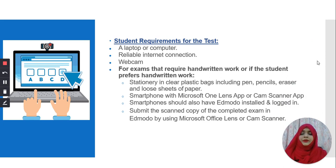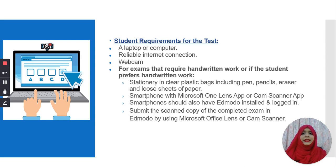Student requirements for the test include: a laptop or computer, a reliable internet connection, and a webcam. For handwritten work, you need stationery in a clear plastic bag including pens, pencils, erasers, and loose sheets of paper. You also need a smartphone with Microsoft Office Lens or CamScanner installed, to scan and upload your handwritten answers to Edmodo. Your mobile phone must also have the Edmodo app downloaded and logged in.